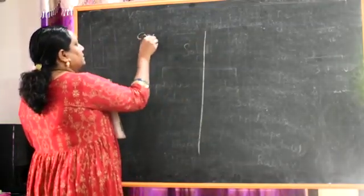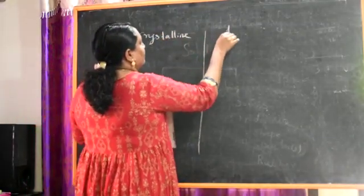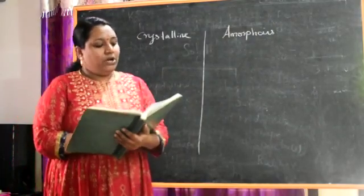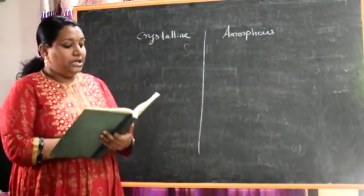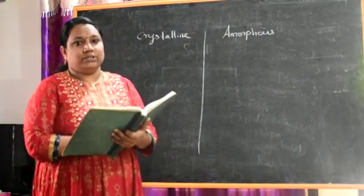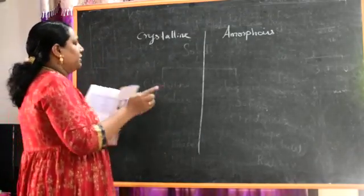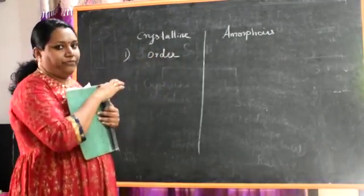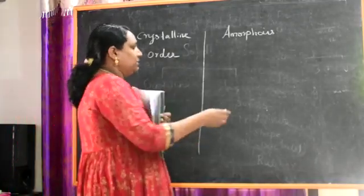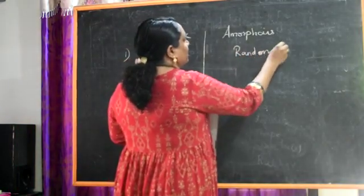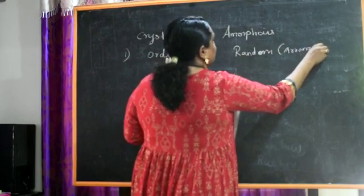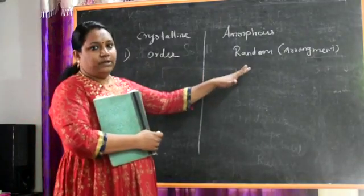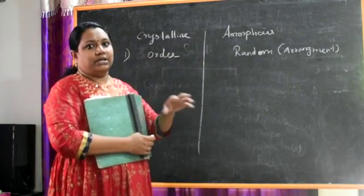The first difference: crystalline solids have a long-range orderly arrangement of constituents, while amorphous solids have a short-range random arrangement of constituents. In crystalline solids, the atoms and molecules are arranged in a neat, patterned fashion. In amorphous solids, the arrangement is random — one atom to the next is random.